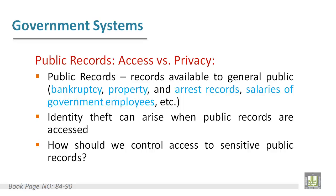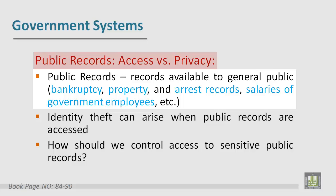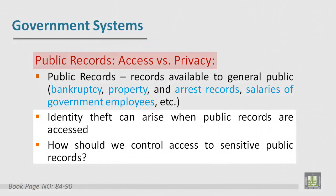In government systems there are things called public records. Public records are records that are available to the general public, such as data about bankruptcy, property, arrest records, and salaries of government employees. This can provide benefits — for example, identifying theft. Identity theft can arise when public records are accessed.